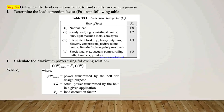In step number 2, we have to determine the load correction factor to find out the maximum power. The load correction factor is given in a table, depending upon the application and type of load. If the type of load is normal load, the load correction factor FA is 1. If the type of load is steady, intermittent, or shock load, the load correction factor changes accordingly. After calculating the load correction factor, we calculate the maximum power using: kW_max is equal to FA into kW, where kW_max is the power transmitted by the belt for design purpose and kW is the actual power transmitted, and FA is the load correction factor.